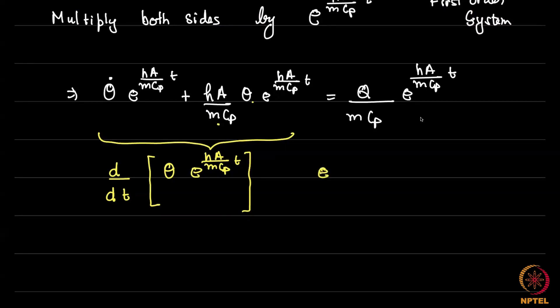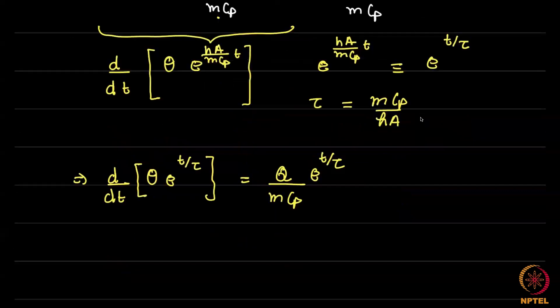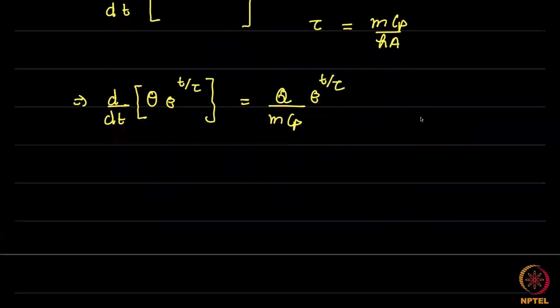Now, if you notice carefully, the left hand side here can be written as d by dt of theta multiplied by E to the power H A by mcp T. Why is that? Quickly consider this. The derivative of one multiplied by the other derivative of the derivative of the first term. So this will be theta dot times E to the power this whole thing. Let us call it T by tau plus this term which is HA by mcp multiplied by theta which is the same as this. So this is a quick check that you can do and that is how we derive this term and that is in fact why you multiplied with this exponential function. Again, in case you have done a differential equation course or in other courses, you would have seen this sort of substitution. So just for simplification, let us call E to the power H A by mcp T because this term is going to repeat again and again as E to the power T by tau. So where tau is what is called the time constant of the first order system which is mcp by HA.